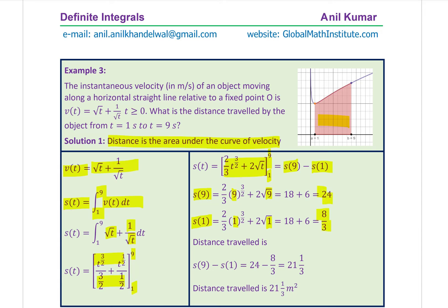We find the difference between s of 9 and s of 1 to find the distance traveled. S of 9 minus s of 1 gives 24 minus 8 over 3, which is 21 and 1 over 3. So the distance traveled is 21 and 1/3 meters.